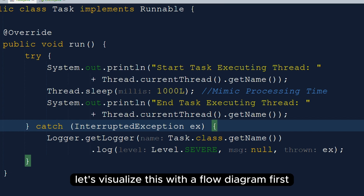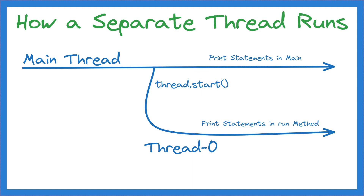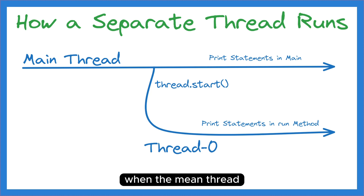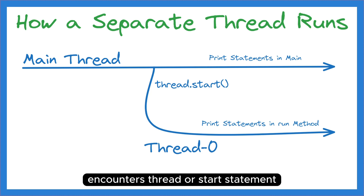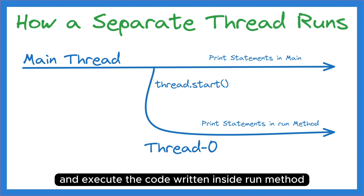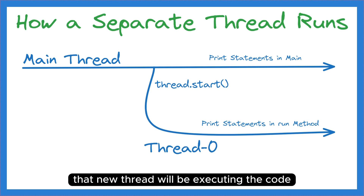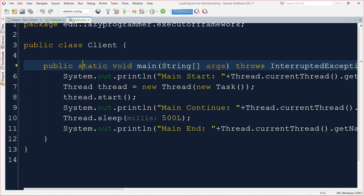Let's visualize this with a flow diagram. First, the main thread will start the execution of the main method. When the main thread encounters the thread.start statement, it will spawn a new thread and execute the code written inside the run method in that new thread. That new thread will be executing the code in parallel to the main thread execution.